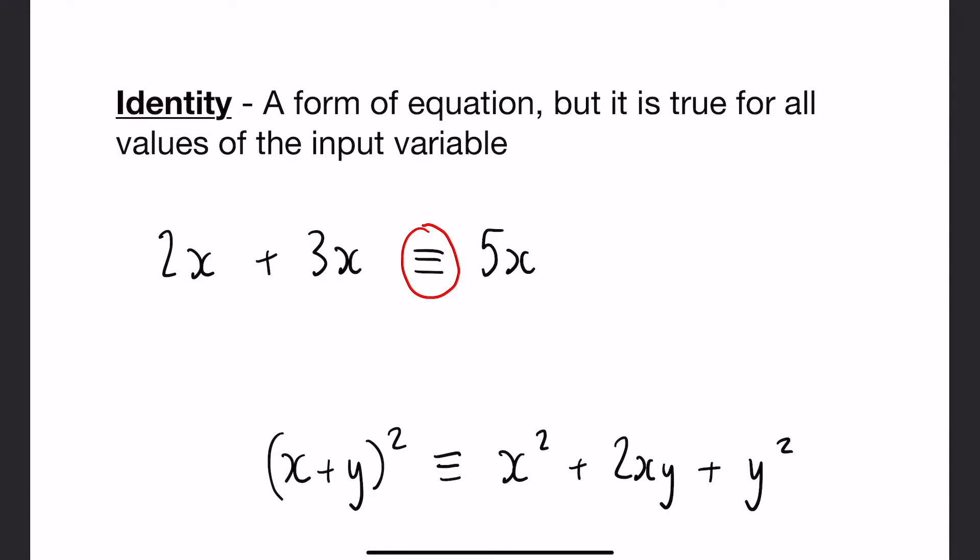So the input variable in this case would be x, as you can see. But if you think about it, let's say x was 2, so 2 multiplied by 2 is 4, 3 multiplied by 2 is 6, and 5 multiplied by 2 is 10. So 4 plus 6 will always equal 10.